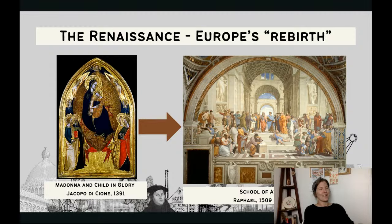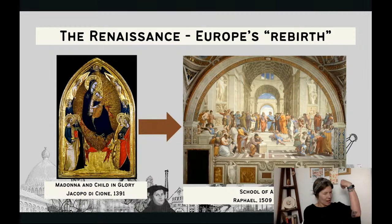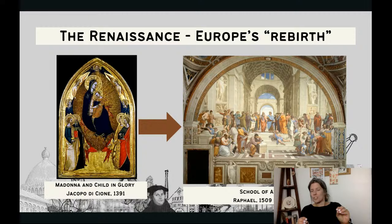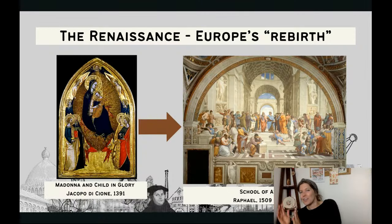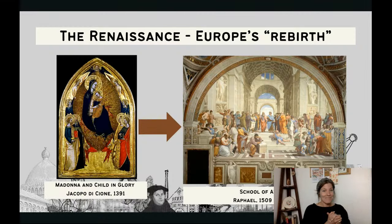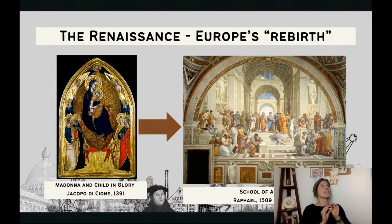If I could teach this entire class through art, I would. Art serves as a visual anchor for your understanding and helps you think back on topics covered. This is a really great visual understanding of what life was like in Europe in the dark ages versus the Renaissance. These two paintings are painted 120 years apart and show a wonderful example of how society and culture was changing in Europe.